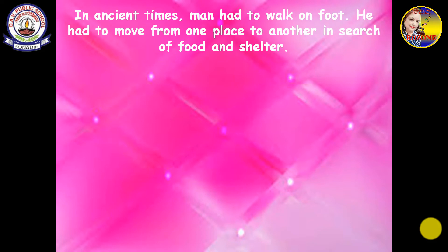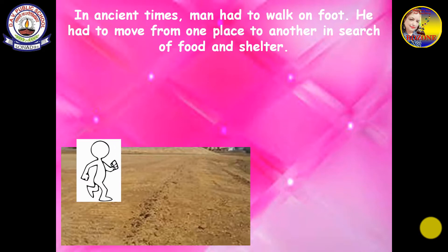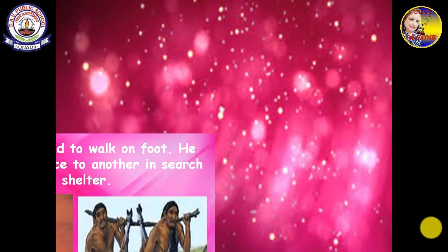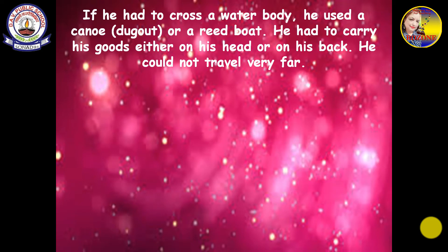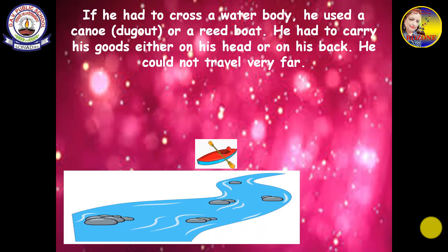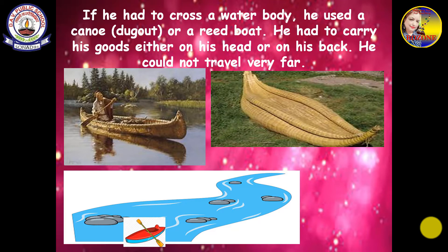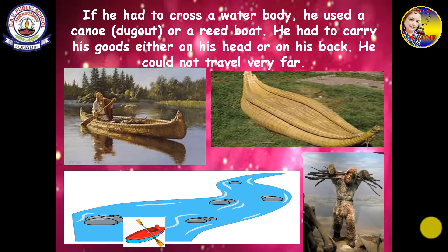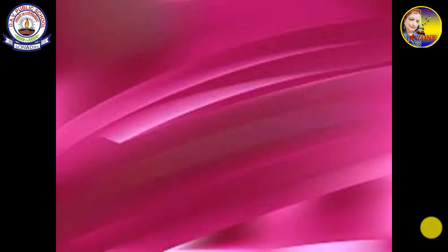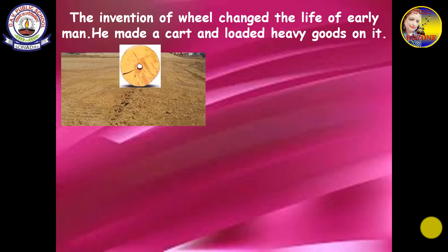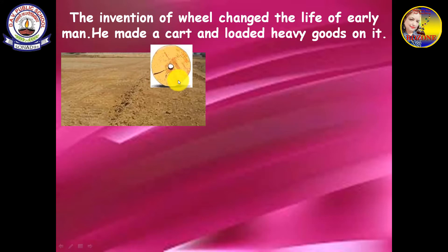In ancient times, man had to walk on foot. He moved from one place to another in search of food and shelter. If he had to cross a water body, he used a canoe — a small boat he had made — or a reed boat. He had to carry goods on his head or back and could not travel very far. The invention of the wheel changed the life of early man — he made a cart and loaded heavy goods on it.